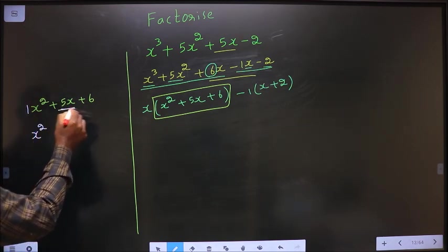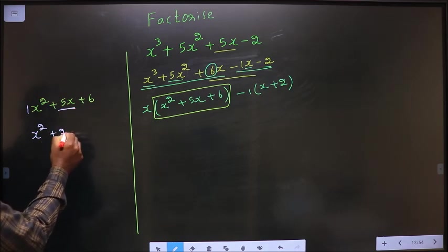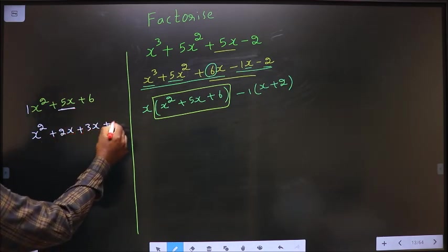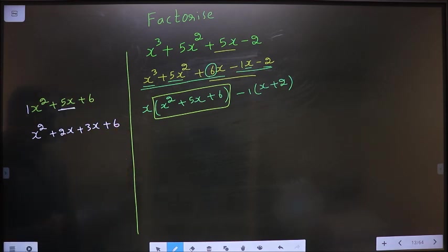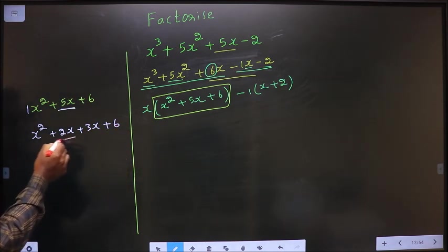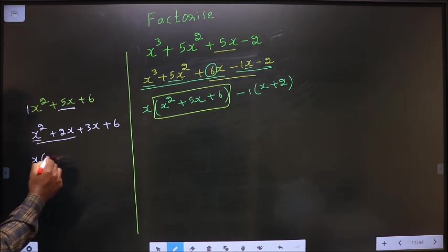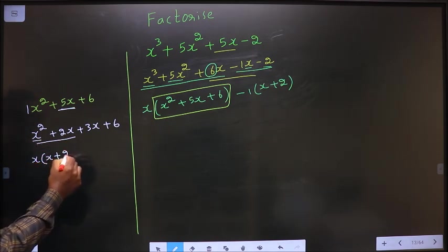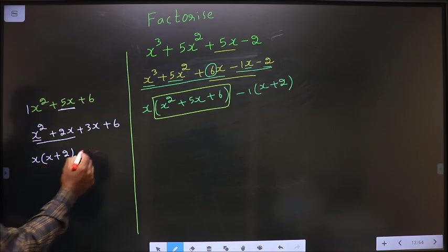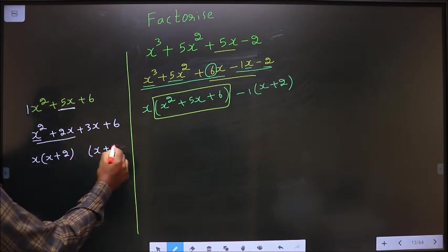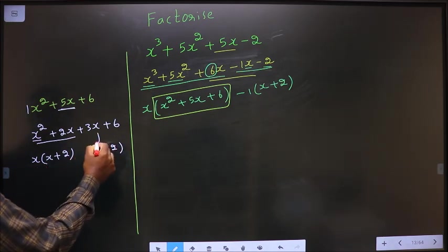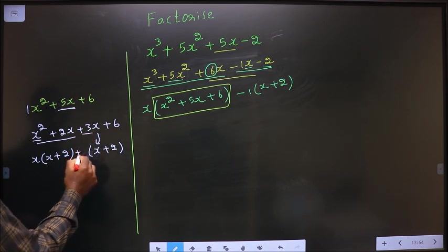So in place of 5x, now I write 2x plus 3x. Okay. Next. From these 2 terms, take out x common. So here x is left and here 2 is left. Here you got x plus 2. So here also it should be x plus 2. x is gone inside means outside is plus 3.